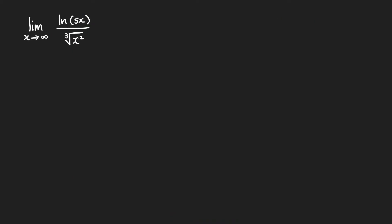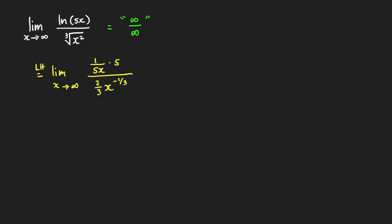Clearly, this first limit here is of an indeterminate form infinity over infinity. Therefore, we can apply L'Hôpital's rule and we'll get the limit as x approaches infinity of the derivative of ln(5x), which is equal to 1 over 5x times the derivative of 5x, which equals 5, over the derivative of the denominator x raised to two-thirds. By the power rule, that is just equal to two-thirds x raised to negative one-third.